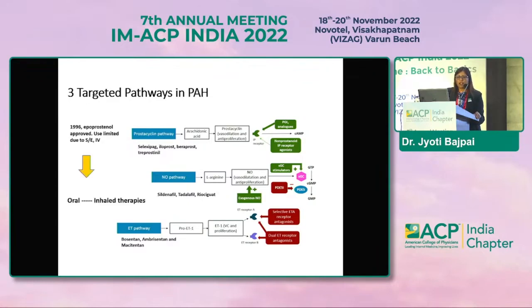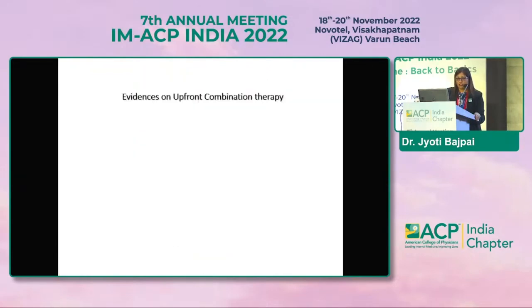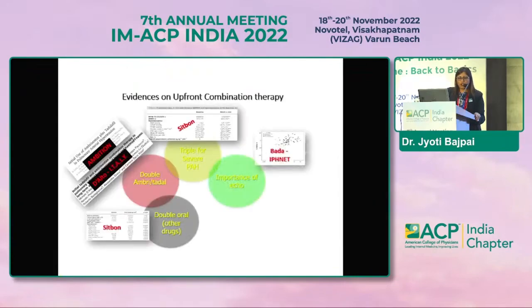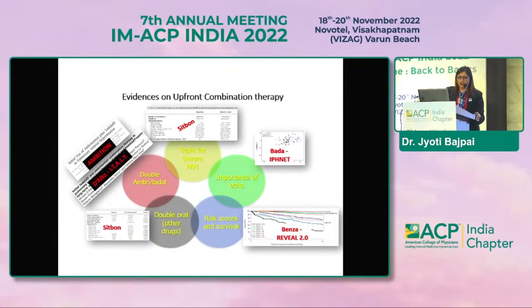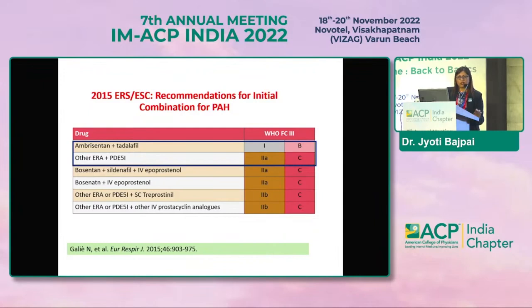The first therapy was developed in 1996 — epoprostenol — followed by many more therapies for pulmonary hypertension. Early intervention is better in PH: early treatment gives no functional impairment and prolongs life, while late intervention leads to progressive remodeling and right heart failure. Key trials supporting upfront combination therapy include the AMBITION trial, GRIPHON trial, SERAPHIN trial, and COMPASS. In 2015, ESC-ERS recommended ambrisentan plus tadalafil as first-line combination therapy with a Class 1B recommendation, particularly for WHO functional class 3 patients.